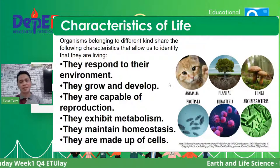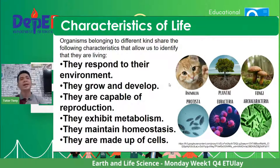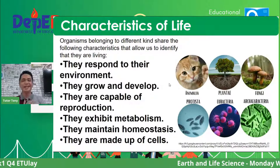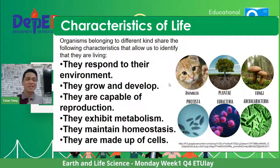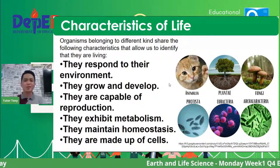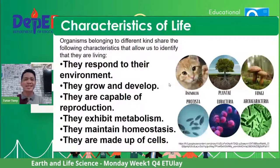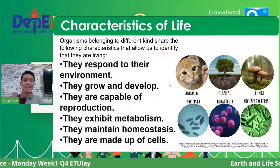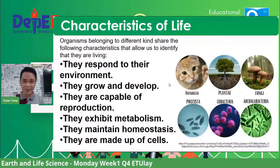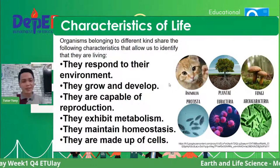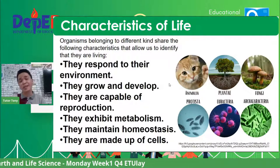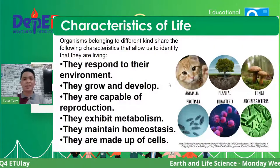Our discussion would not be complete without the characteristics of life. What are the indicators that tell us an entity is living? First, living things respond to their environment — we respond to stimuli like heat. Second, they grow and develop over time. Third, they are capable of reproduction — we came from the cells of our father and mother, whether asexual or sexual reproduction. Fourth, living things exhibit metabolism — how fast our body cells use energy derived from food.